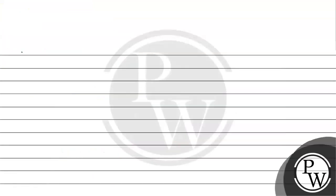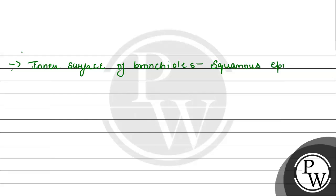Let's look at different options. Option A is the inner surface of bronchioles, which is paired with squamous epithelium. The inner surface of bronchioles is actually lined with simple columnar or cuboidal cells, which help in mucus movement. So the pairing given is wrong. Therefore, this is the wrong option.